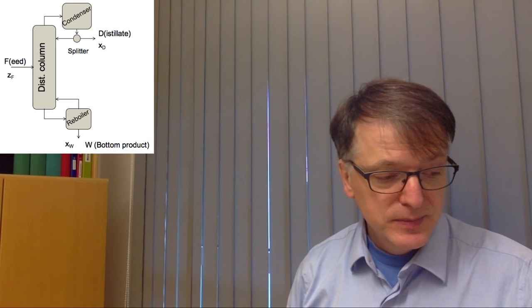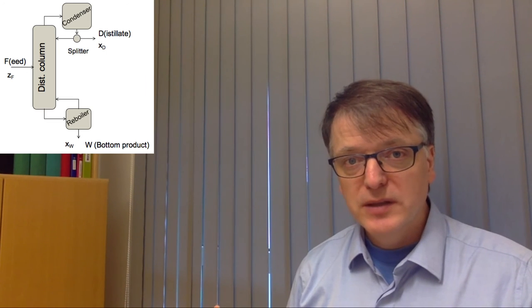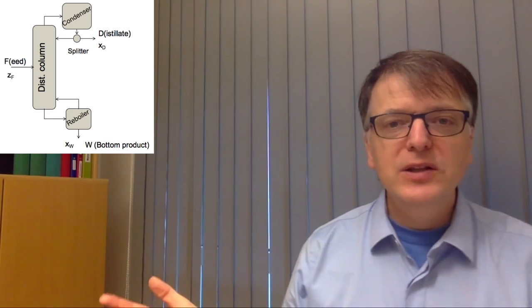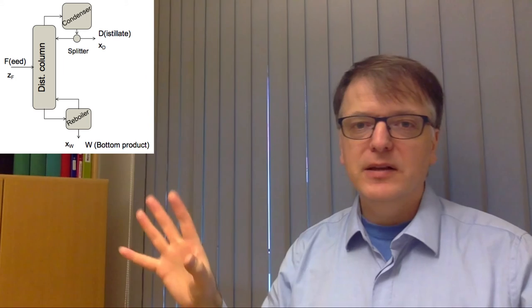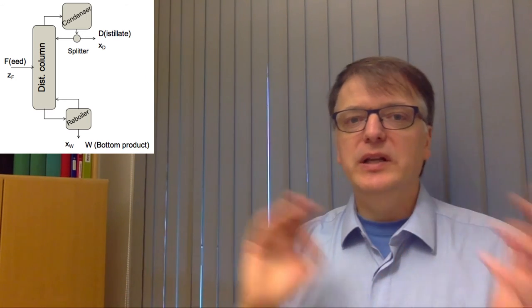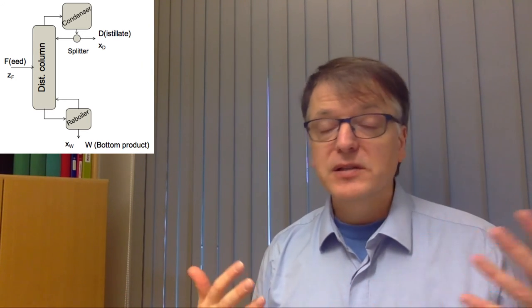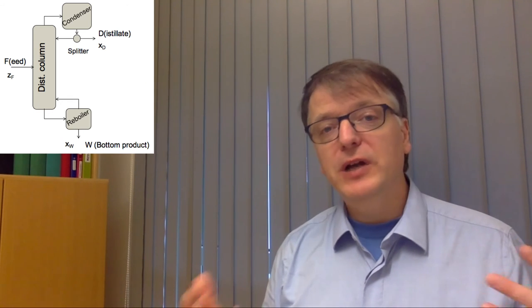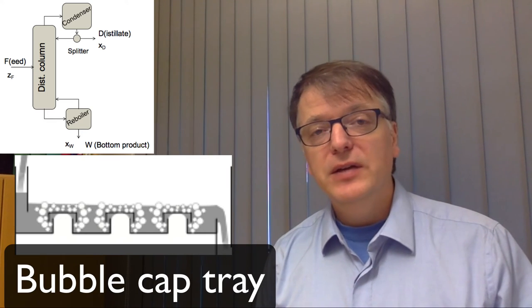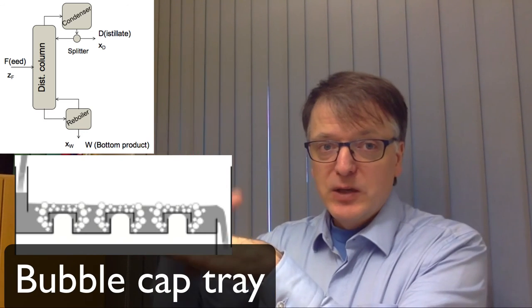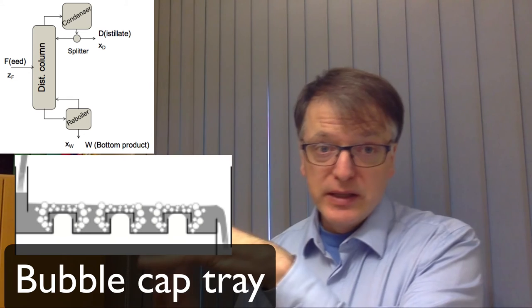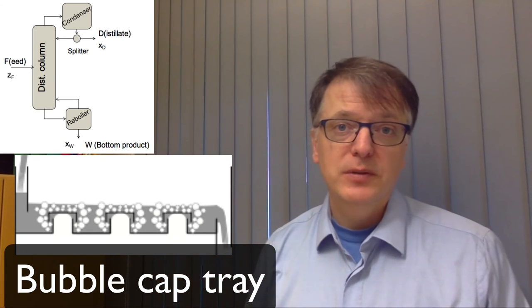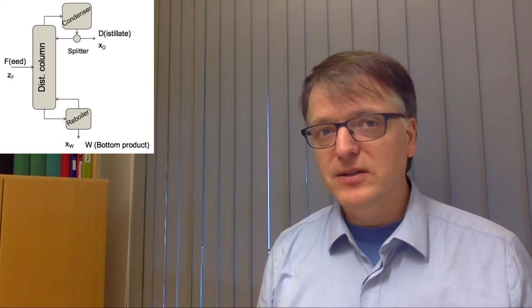And another thing we haven't talked about at all is that inside a column you will need to have some things that make the contact good between the liquid and the gas. And typically you have some physical stages, like a bubble cap tray for example, or a sieve tray. The liquid falls onto them and the gas percolates through to make the contact as good as possible. And we haven't said anything about how efficient these are.